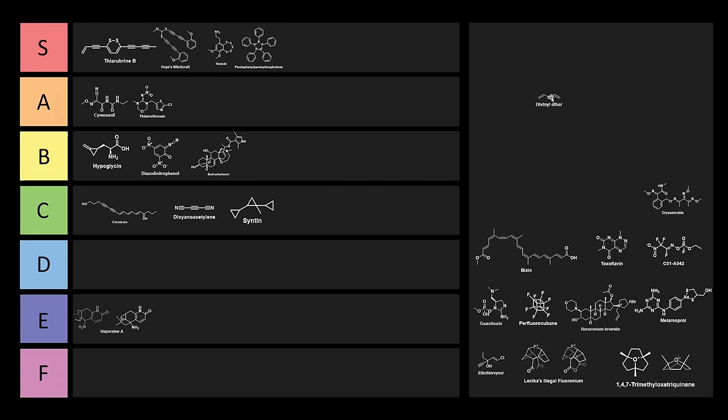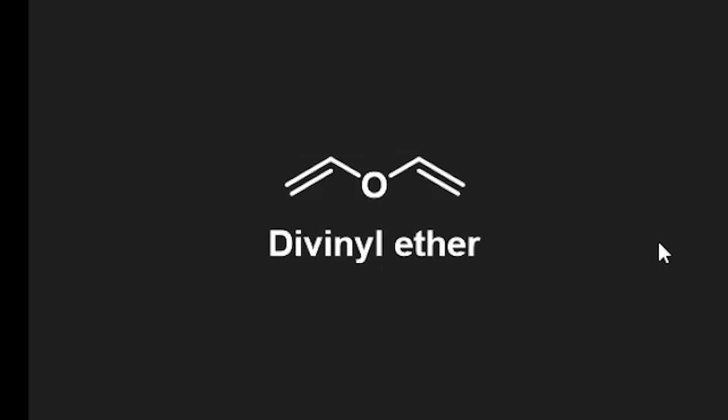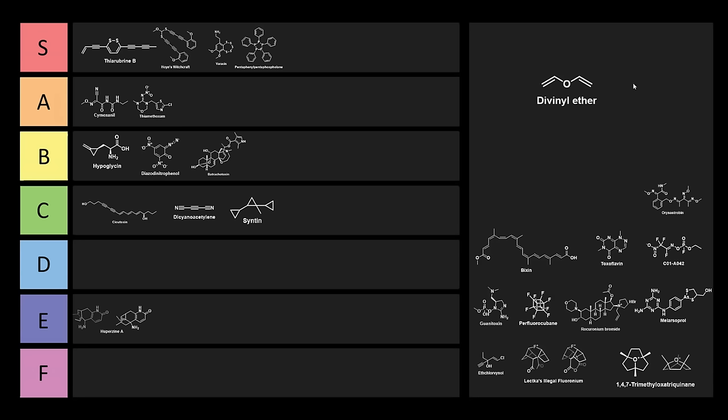Next, we have Divinyl Ether. You look at this, and you're probably thinking, this looks a little bit like a crow. Divinyl Ether is a colorless volatile liquid that's mainly been used as an inhalation anesthetic. I couldn't believe that this was an inhalation anesthetic, and two vinyl groups on a single oxygen is extremely cursed-looking.